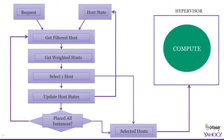Some of the things we had to do at Yahoo: looking more in depth at the scheduling algorithm, you first get the list of filtered hosts depending on the request and host state, then the filtering logic applies, weights are applied, and then one host is selected. That host is put in the list of selected hosts and the in-memory host map is updated. Updating the host map is one of the things that slows the scheduler down — that is one of the main causes of scheduler slowness.